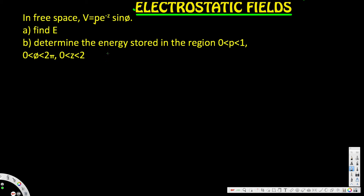Hey, what's going on guys. Let's look at this problem. This question is asking: in free space, V is equal to ρe^(-z)sinφ. Part A is asking to find the electric field, and Part B is asking to determine the energy stored in the region ρ from 0 to 1, φ from 0 to 2π, and z from 0 to 2.